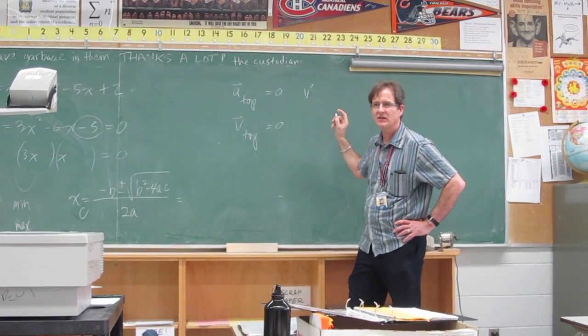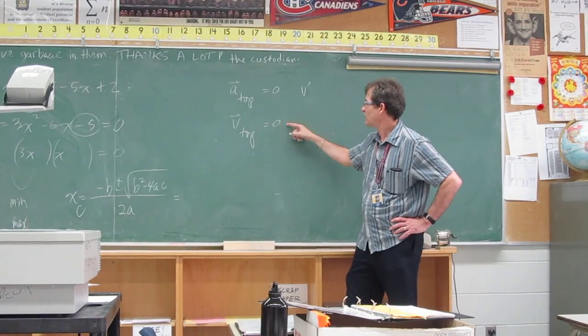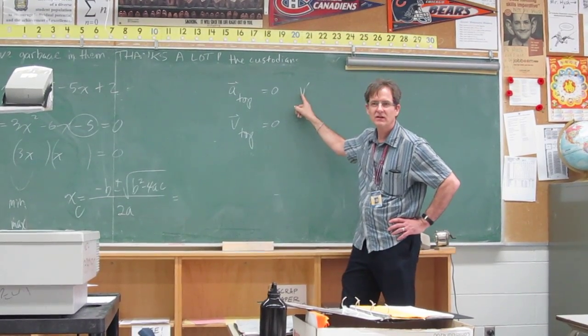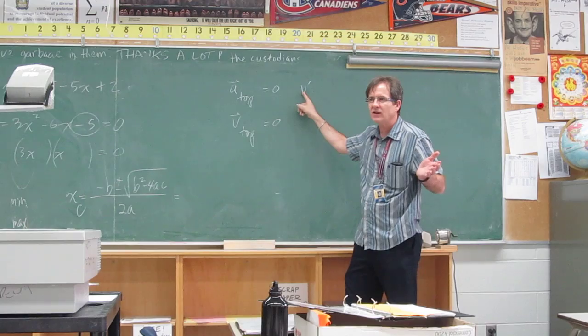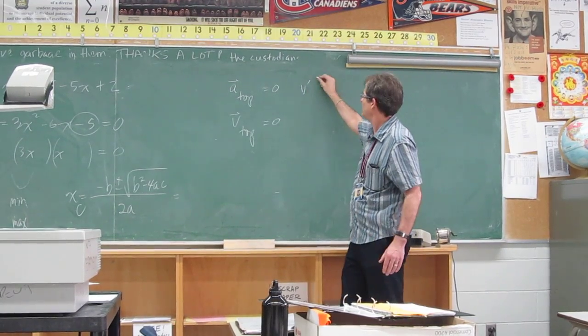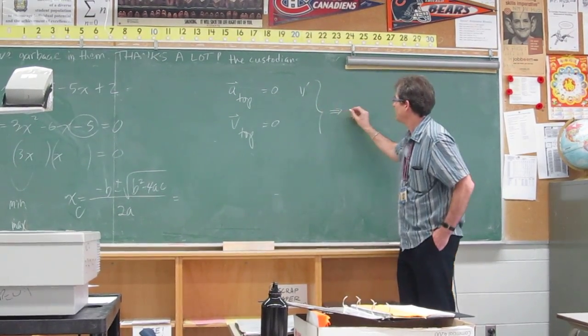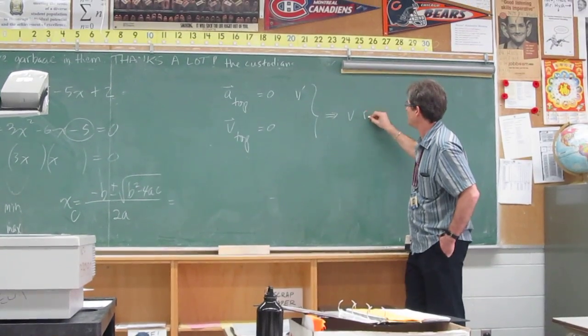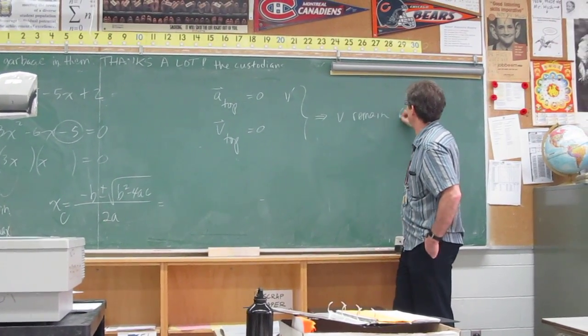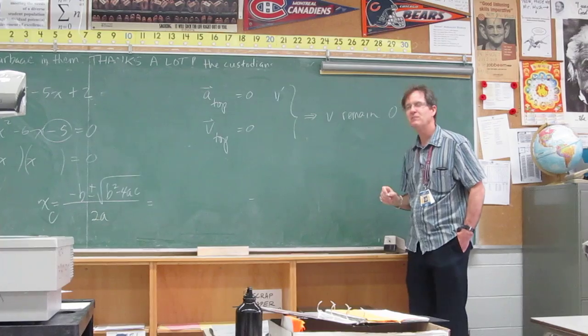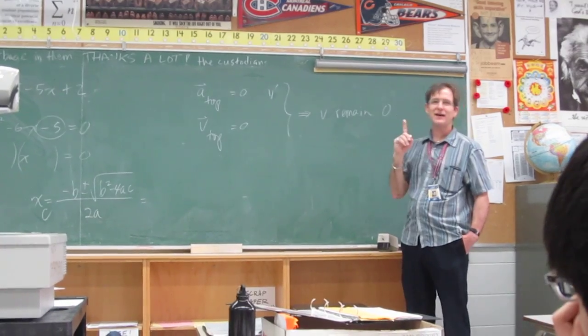What should happen to the velocity? It's zero at the top and it's not changing. So it should stay zero. Right? These two facts imply that the velocity will remain zero. What? That means it's not coming back down.